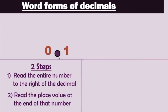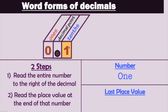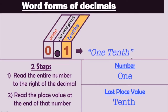So let's put the place values here — we've got our ones place, our decimal point, and the tenths place. Step one: read the entire number to the right of the decimal point. The number to the right of the decimal is just the number one. Step two: read the place value at the end of that number, which is the tenths place. We put these two together — 0.1 is properly read as one tenth, because the number is one and the last place value is the tenths place.